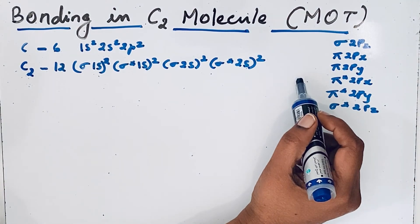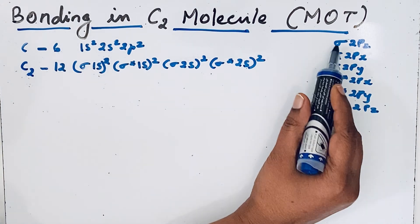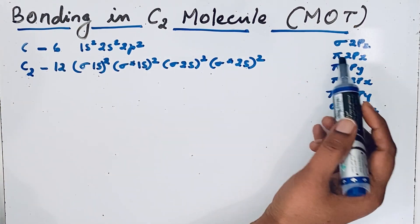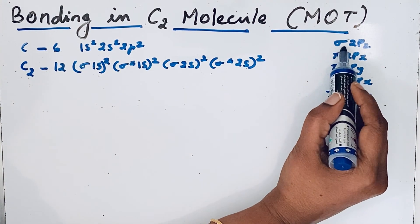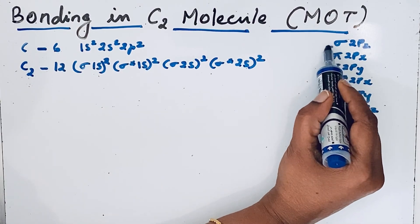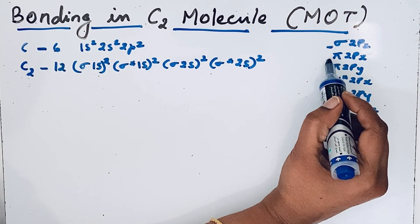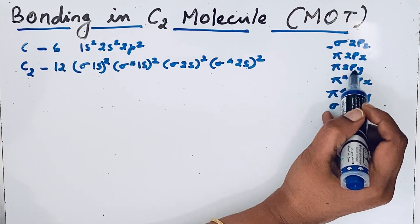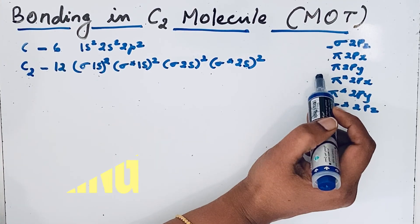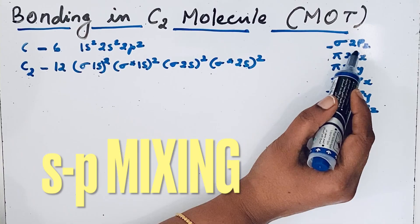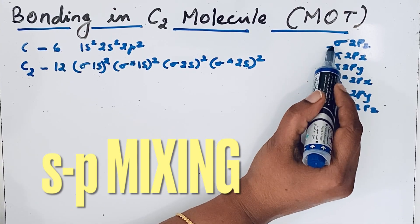But in carbon, due to sp mixing, this order is reversed. Due to sp mixing, this σ2pz orbital has high energy, so we are writing π2px and π2py first.